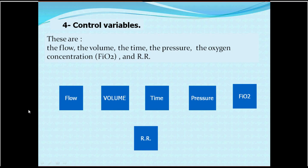The fourth component is control variables. When we deliver air or breath, we consider its physical characteristics: it has a volume, a flow, it is delivered in a certain time, developed at a certain pressure, with a certain FiO2 composition, and these data are repeated at a frequency — the respiratory rate per minute. These are the control variables — the physical characters of the breath itself.